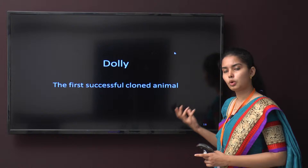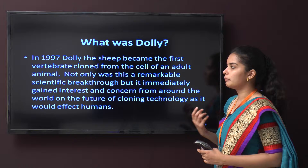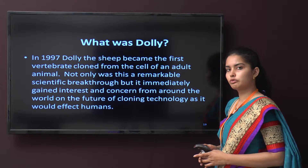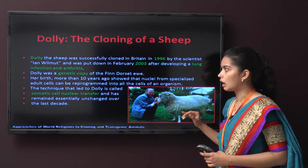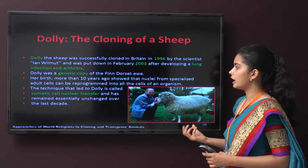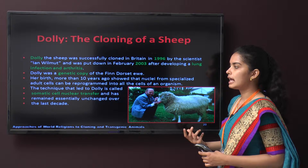Now, Dolly the sheep — the first cloned animal. In 1997, Dolly became the first vertebrate cloned from the cell of an adult animal. This was a remarkable scientific breakthrough that immediately gained worldwide interest and concern about the future of cloning technology and its implications for humans. Dolly was successfully cloned in Britain by scientist Ian Wilmut and was put down in February 2003 after developing a lung infection and arthritis. She was the genetic copy of a Finn Dorset ewe, and her birth showed that nuclei from specialized adult cells can be reprogrammed. This technique is called somatic cell nuclear transfer.